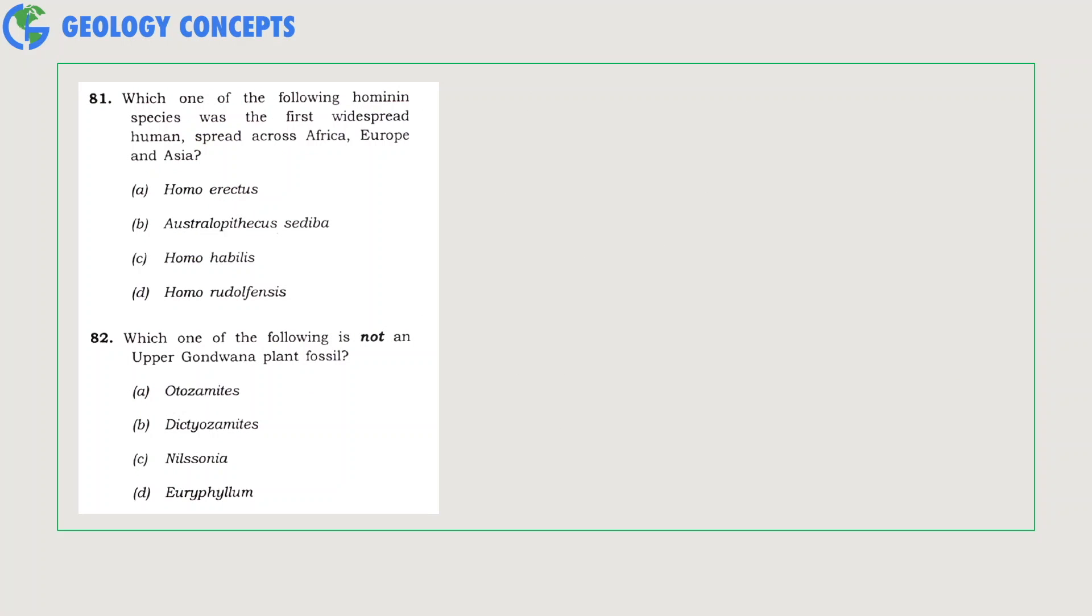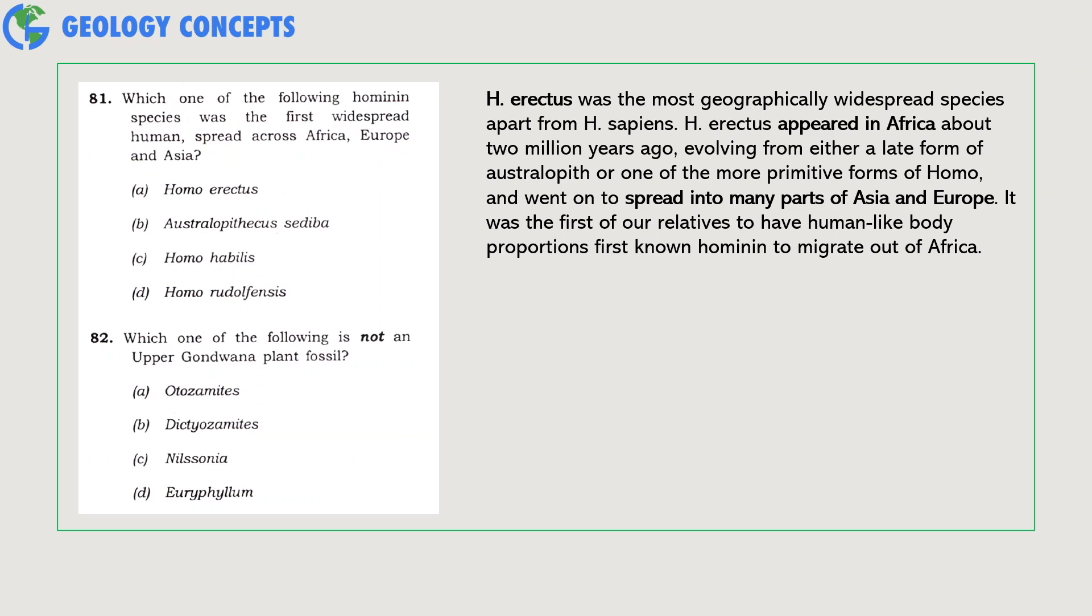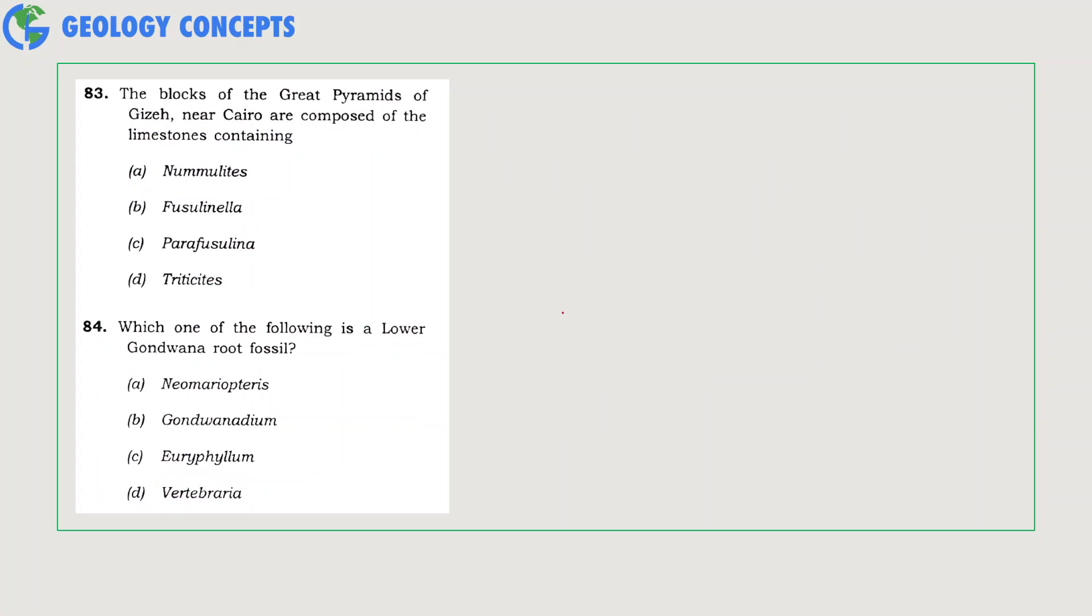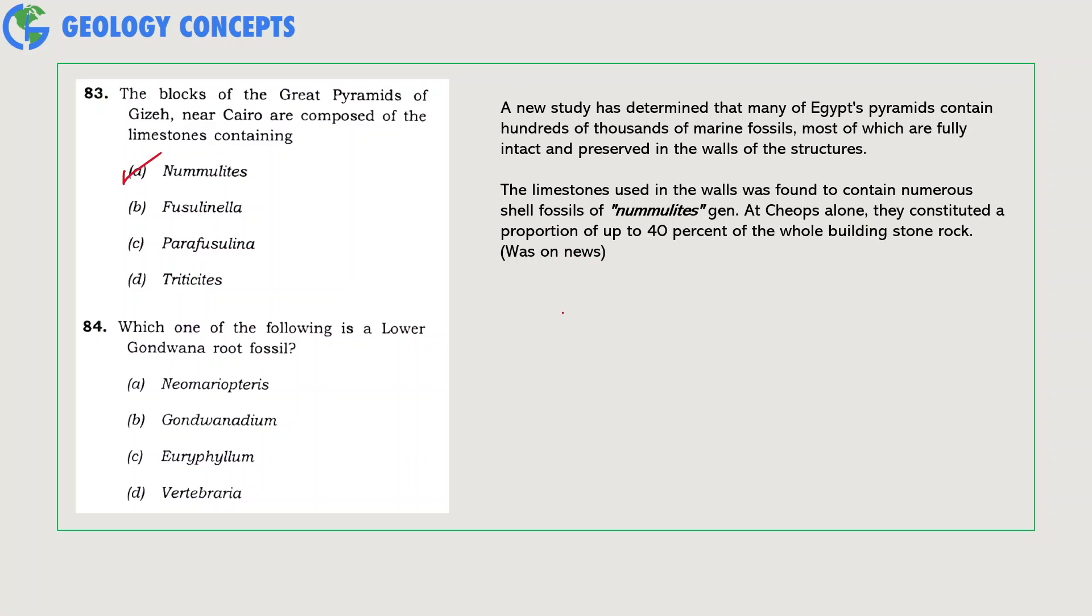The blocks of great pyramids of Giza near Cairo are composed of limestone containing what? A new study has determined that many of the Egyptian pyramids contain hundreds and thousands of marine fossils, most of which are fully intact and preserved in the walls of the structure. The limestone used in these walls was found to contain numerous shell fossils of nummulites. So option A, nummulites, is the right answer.